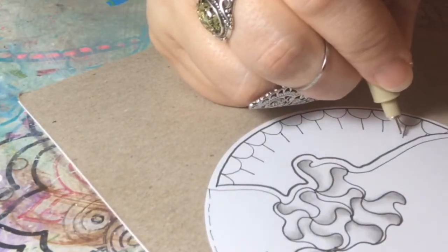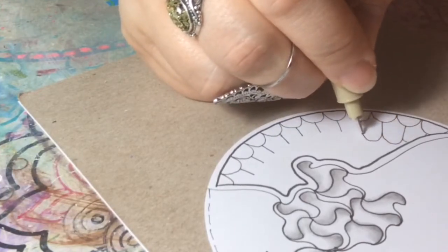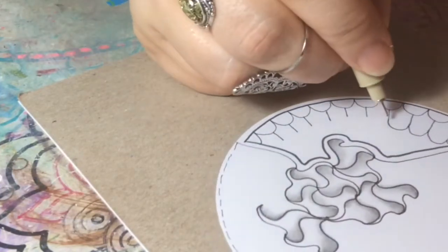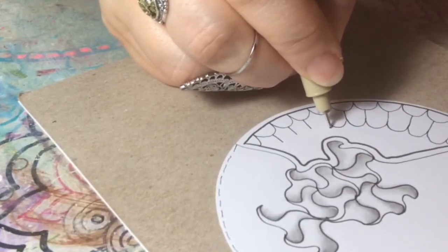Then you're going to draw a scallop on top of that like this, and do that all the way across.